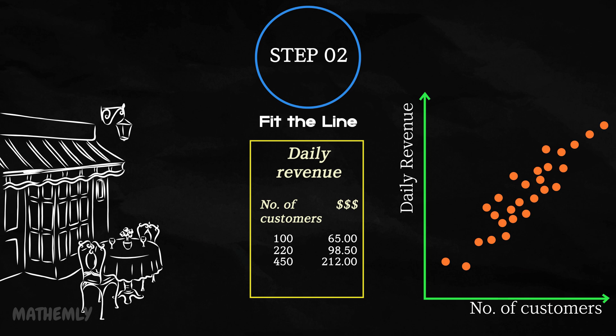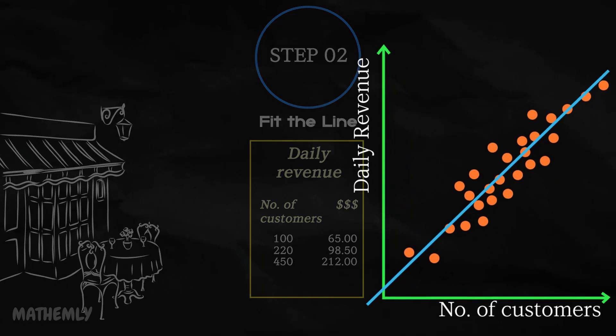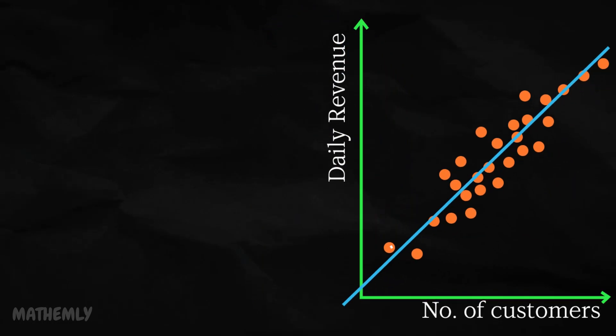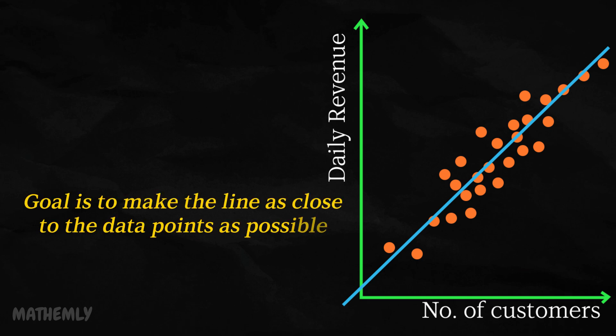Step 2, Fit the line. Once you have your data, the next step is to determine the best fitting line that represents the relationship between the number of customers and the revenue. Think of this line as a summary of the data. It captures the general trend without getting caught up in every single detail. The algorithm calculates the line that minimizes the gap between the actual data points and the predicted values on the line. This process ensures the line reflects the overall pattern in your data. We won't go into the heavy math behind it, but just know that the goal is to make the line as close to the data points as possible so it becomes a reliable tool for prediction.